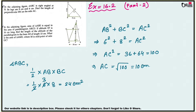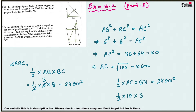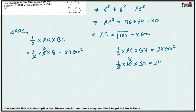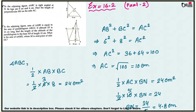Now, if we let AC be the base of this triangle, then BN is the height. So the area is also half times AC times BN, which also equals 24 centimeter square. We know AC is 10, so BN equals 24 divided by 5, which equals 4.8 centimeters. That is your answer.